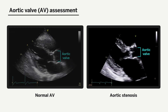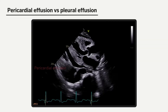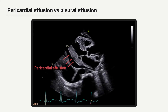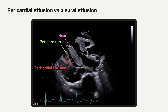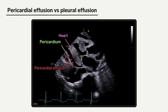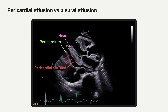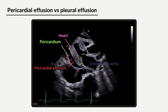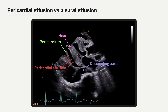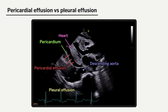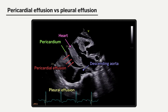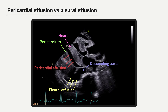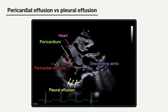The parasternal long axis view can also be useful for the assessment of pericardial effusions. A pericardial effusion appears as free fluid between the heart and pericardium, as depicted by the red arrows in this video loop, and can be distinguished from a pleural effusion by its position above the descending aorta. A pleural effusion, also seen in this video loop as demonstrated by the yellow arrows, will be located below the descending aorta.